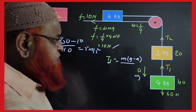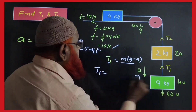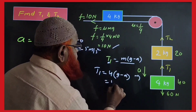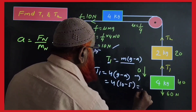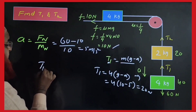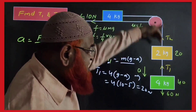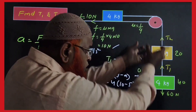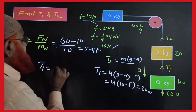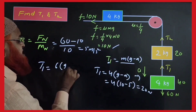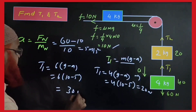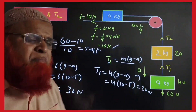For anybody coming downwards, formula is M into (G minus A). T1 is 4 into (10 minus 5) which is 20N. For T2, both blocks are coming downwards, so total mass on T2 is 2 plus 4 which is 6, into (G minus A) = 6 into (10 minus 5) = 30N.